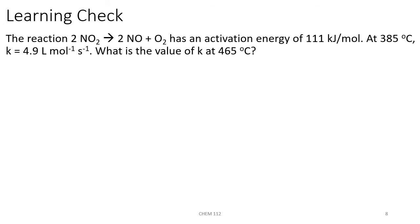The reaction 2NO2 forming 2NO plus O2 has an activation energy of 111 kilojoules per mole. At 385 degrees Celsius, the rate constant equals 4.9 inverse molarity times seconds. What is the value of the rate constant at 465 degrees Celsius? We're going to use our two-point form of the Arrhenius equation because we know our activation energy and we know two temperatures and one rate constant. It doesn't matter what we call T1 and T2 or K1 and K2, as long as we're consistent and keep the appropriate temperature with the appropriate rate constant. Our Ea is equal to 111 kilojoules per mole.